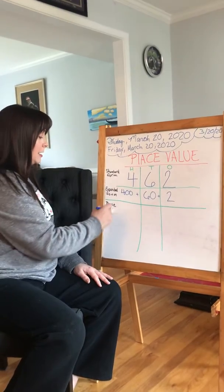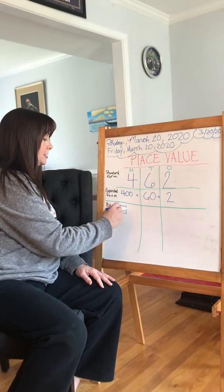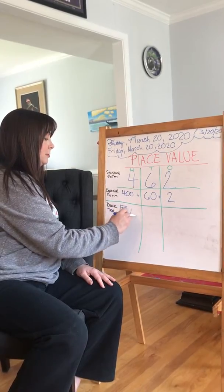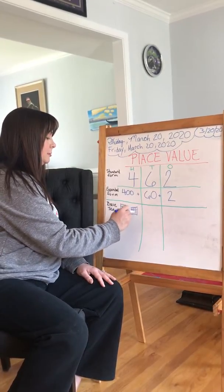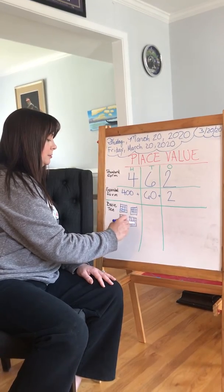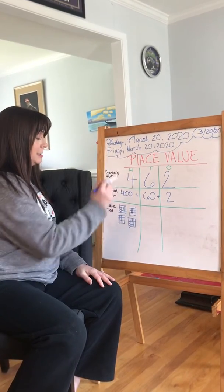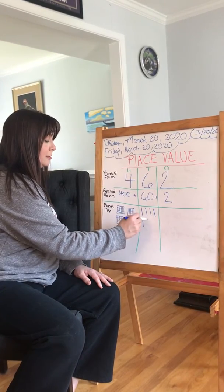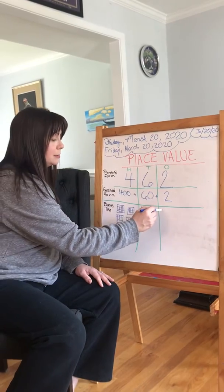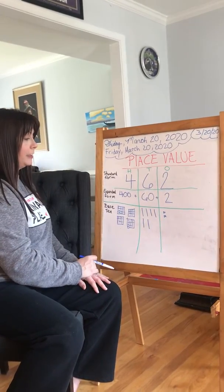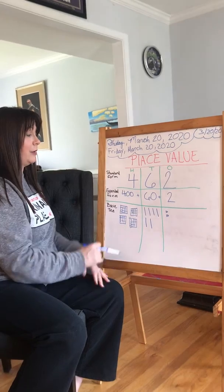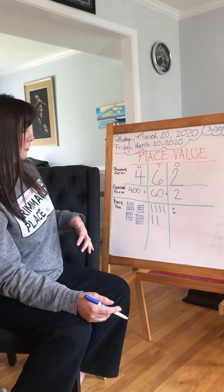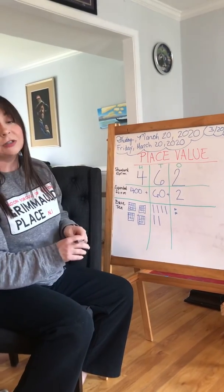And for base 10, you would need 4 hundreds, then 6 tens and 2 ones. And that is how you do a place value, or a base-10 model of place value for this number. Okay? So that's just a quick review.